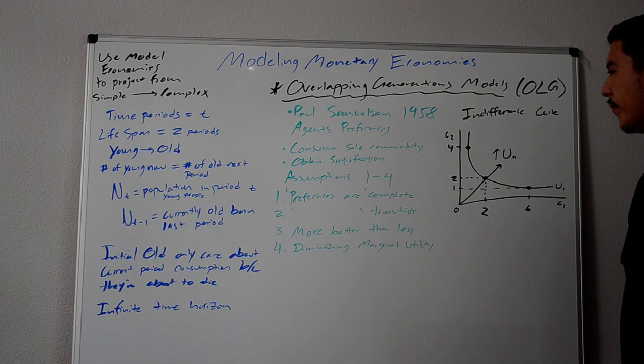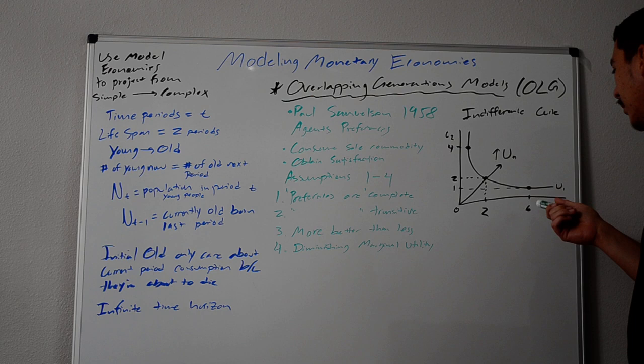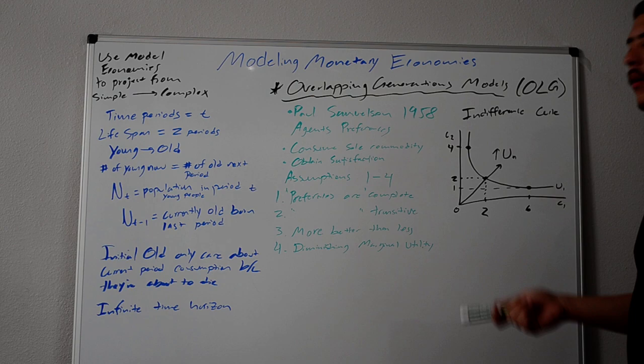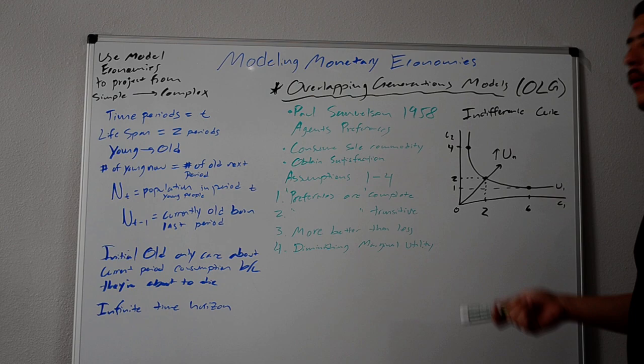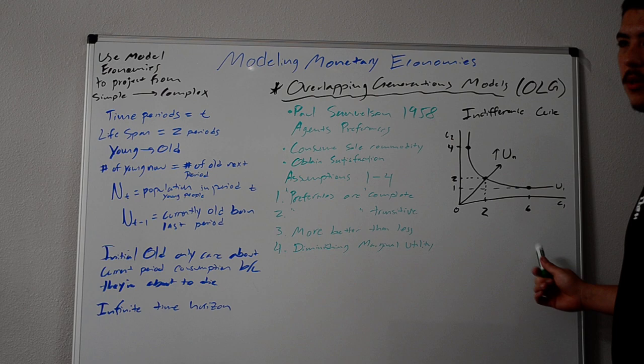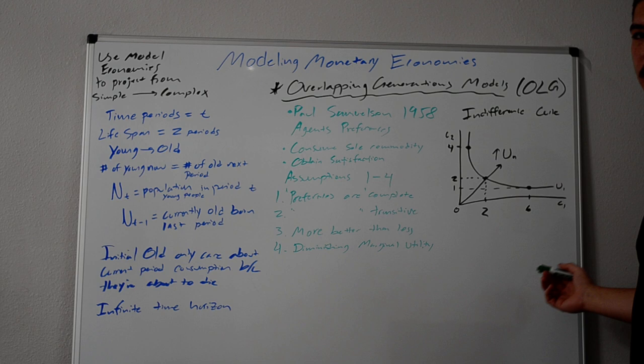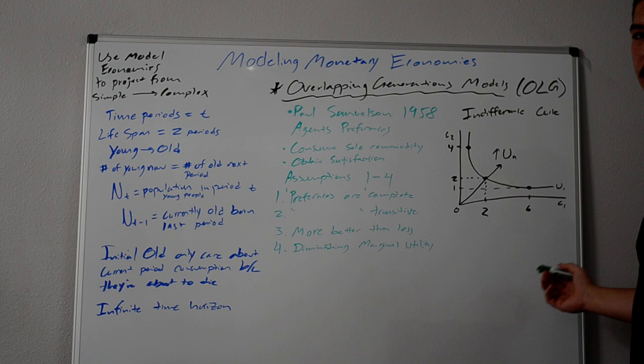Over here, we have a basic indifference curve. On the axis, we have consumption of good one, consumption of good two. These are just the values. Again, none of the actual numbers in any of these cases matter. This is not drawn to scale. Don't worry too much about the numbers, or the size, or the shape. You just have to understand what it represents, and how you use it.